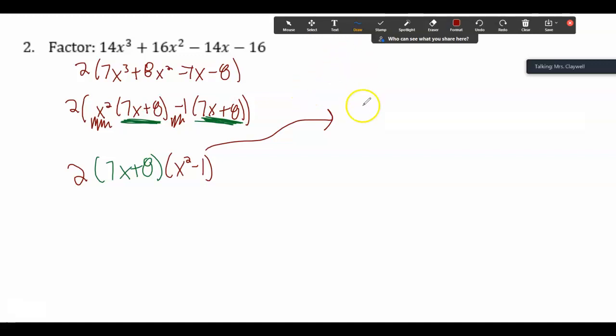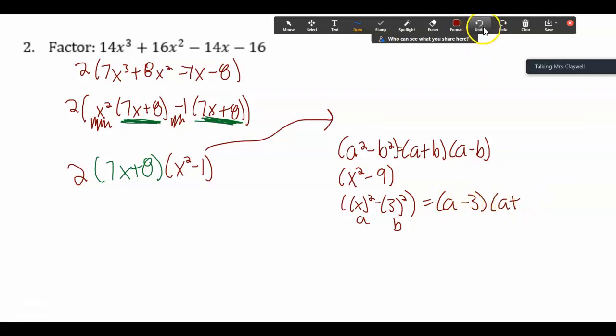If we remember difference of squares, a squared minus b squared equals a plus b, a minus b. For example, if we had, or if I had like X squared minus 9, my a is X, my 9 is 3. So here's my a and my b. So this is a minus b. Referring to this problem, this is the same as X squared and 1 squared. So this is really 2, 7X plus 8, X minus 1, X plus 1.